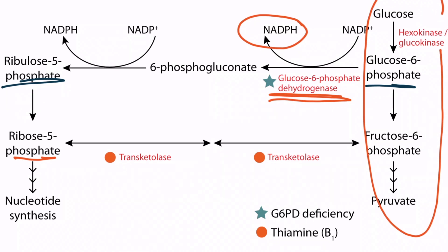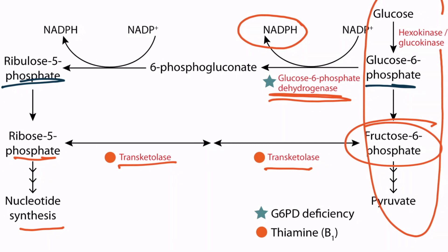Ribulose 5-phosphate can then be converted into ribose 5-phosphate by an enzyme that is relatively unimportant. Ribose 5-phosphate can then either be utilized in the synthesis of nucleotides, or it can be returned to the glycolytic pathway in the form of fructose 6-phosphate. The conversion of ribose 5-phosphate to fructose 6-phosphate is catalyzed by the enzyme transketolase. This is an important enzyme because it requires thiamine, or vitamin B1, as a cofactor. This means that the activity of the HMP shunt can be decreased in patients with a thiamine deficiency.